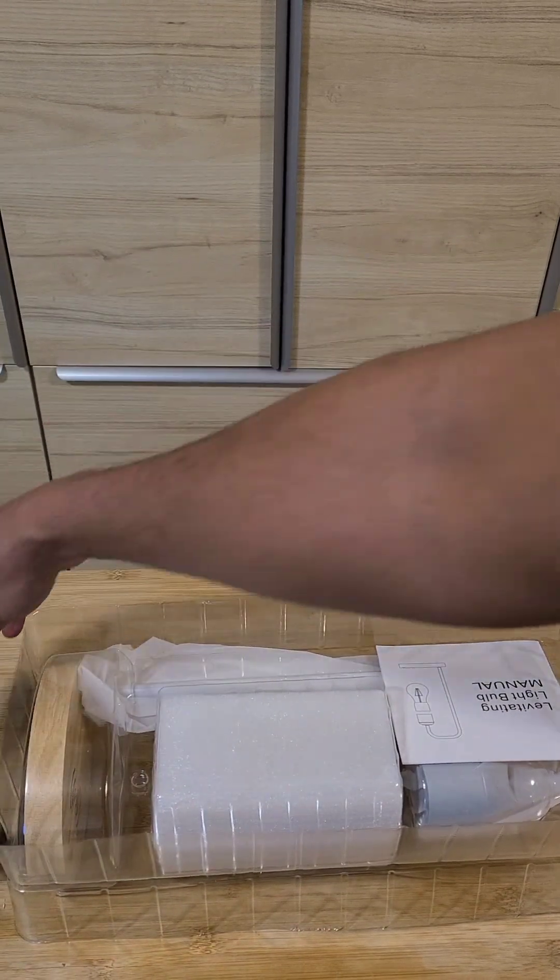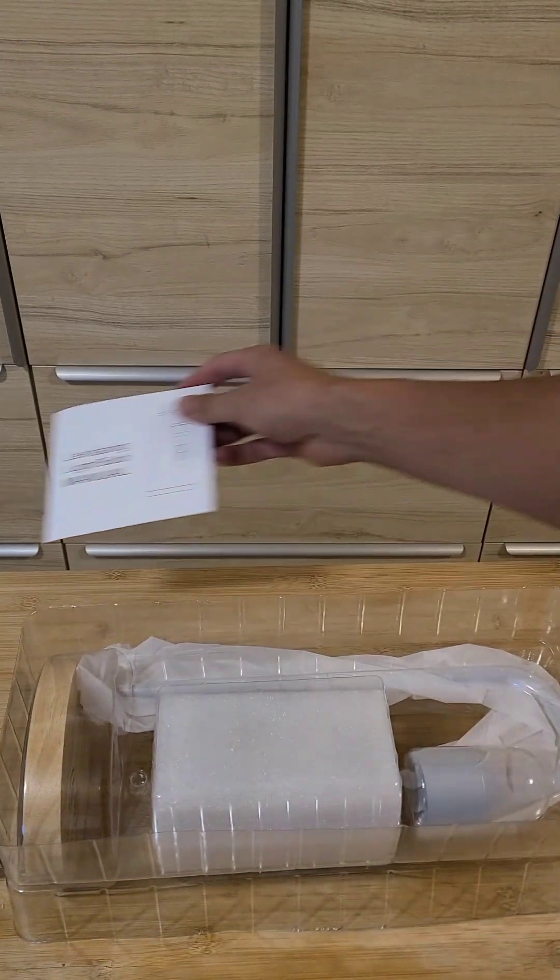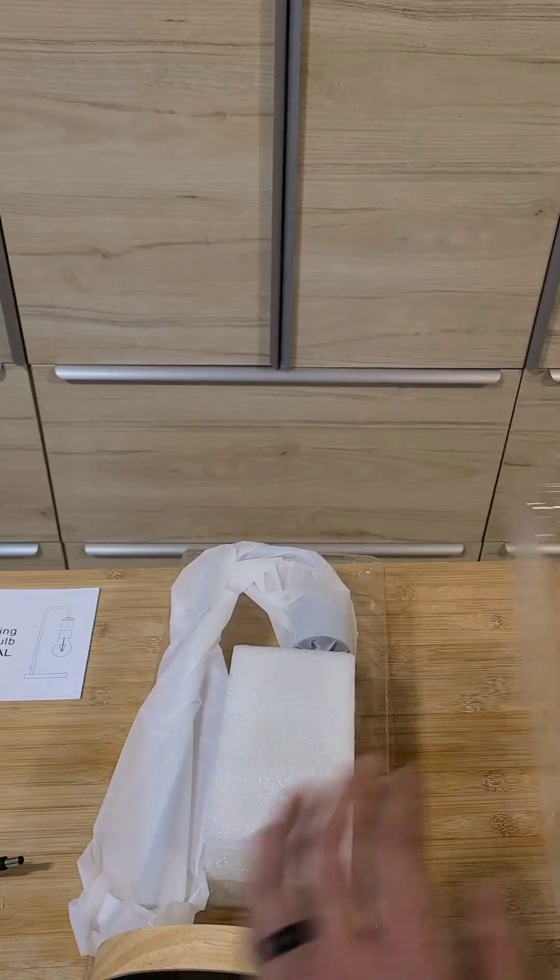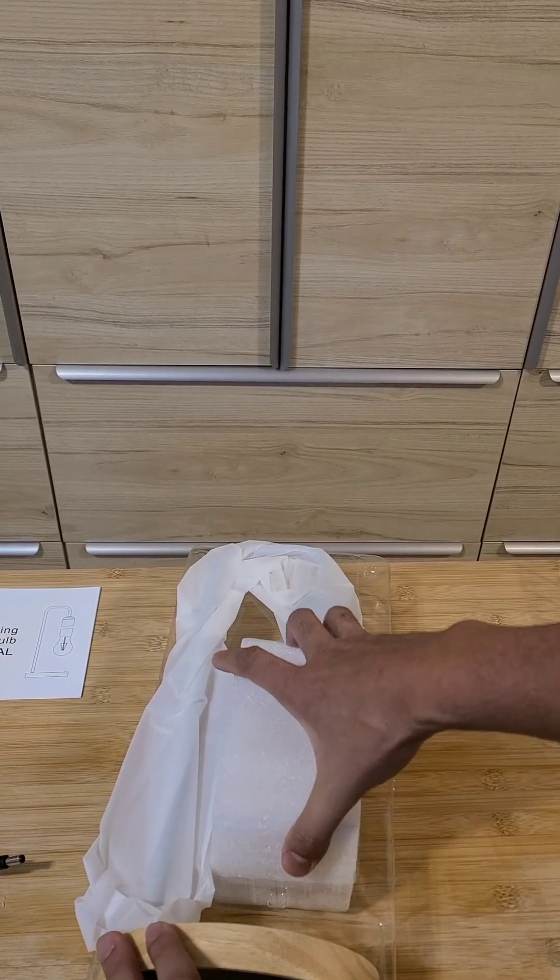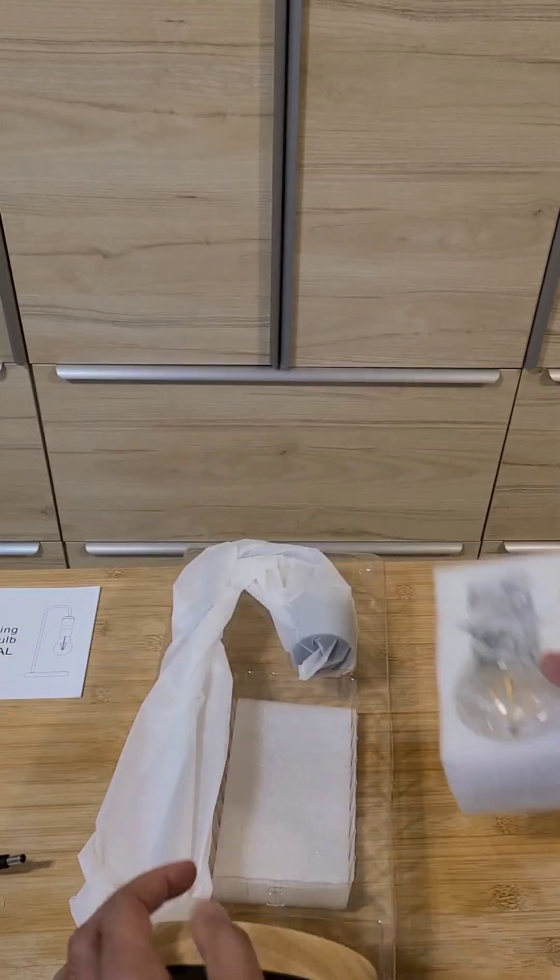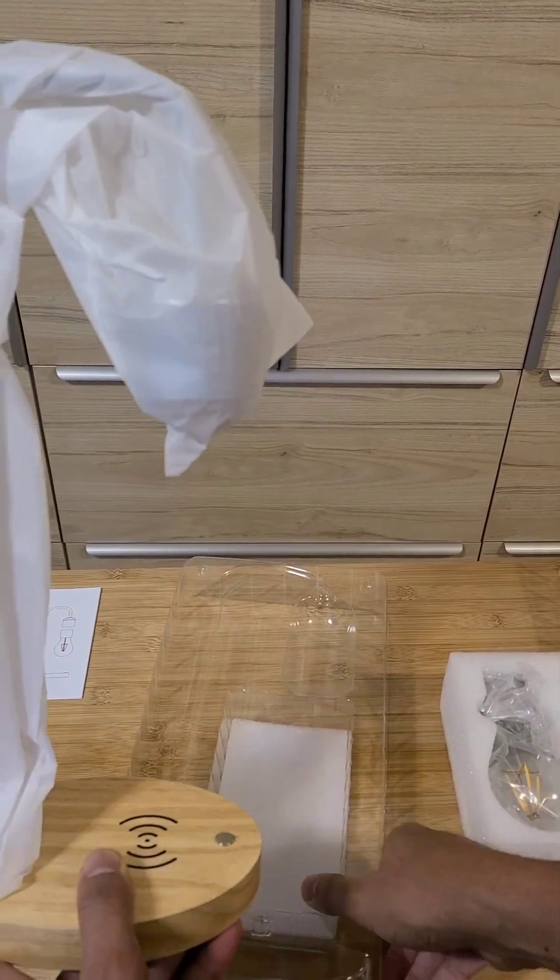Alright, so it comes with a power cord, got the instruction manual, the lamp is in here. Okay, there's the bulb, packaged nicely. There's the base, some more foam.